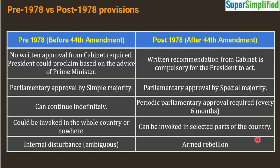Now let's look at some comparisons between provisions before and after 1978, i.e., before and after the 44th Amendment. Before 1978, no written approval from the Cabinet was required to proclaim national emergency — the President could proclaim it based on the advice of the Prime Minister alone. But now, written recommendation from the Cabinet is compulsory. Previously, parliamentary approval by simple majority was sufficient; now it requires special majority. Before 1978, the emergency could continue indefinitely; now periodic parliamentary approval every six months is required.